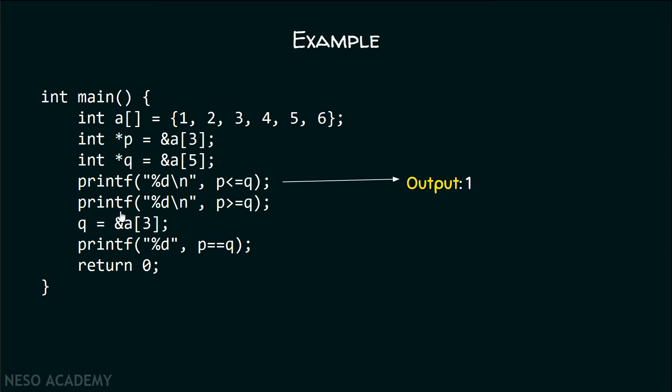Now, with the help of this printf function, I will print the result of P greater than or equal to Q. We know that P is not greater than Q, therefore the output is zero.